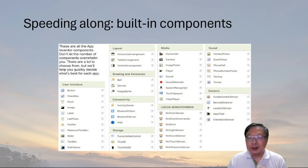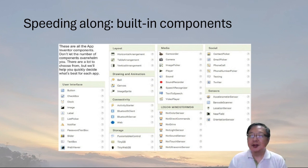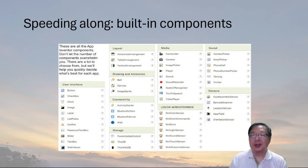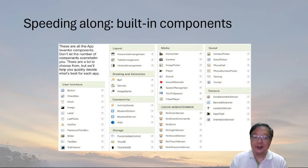As a computer and smartphone user, you'll recognize a lot of the components in App Inventor's palettes. Elements like buttons, screen labels, and text boxes are common in webpages, desktop programs, and smartphone applications. Because App Inventor has these ready-made elements, you can speed up the process of creating apps.